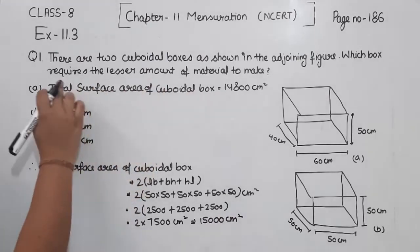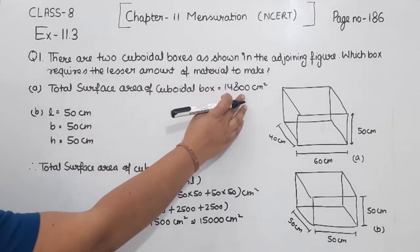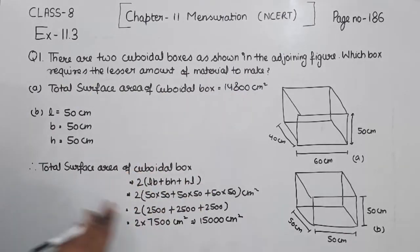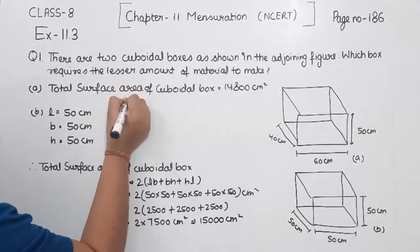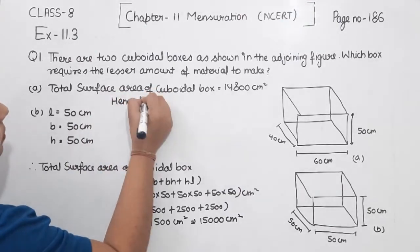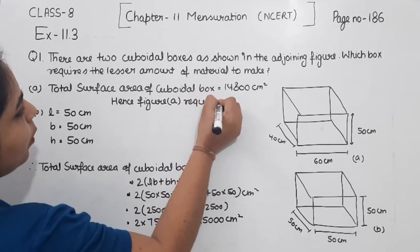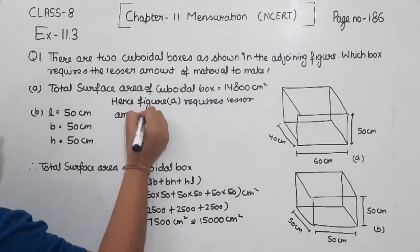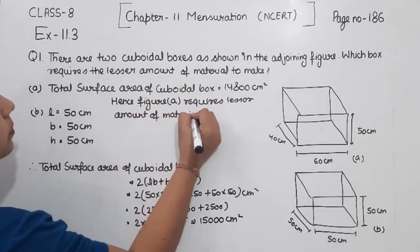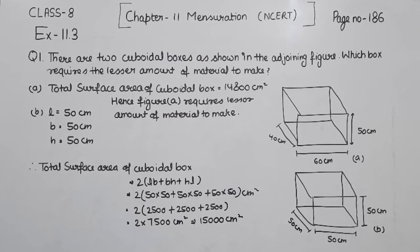Now we compare: the first box requires 14,800 cm² of material and the second box requires 15,000 cm². Hence, figure A requires the lesser amount of material to make. With this, we have completed question number 1.